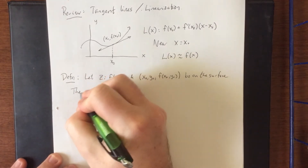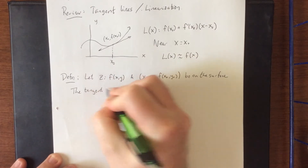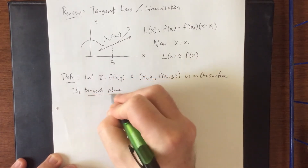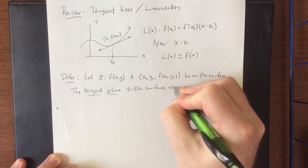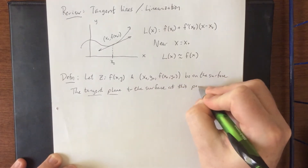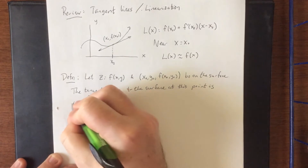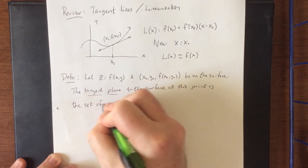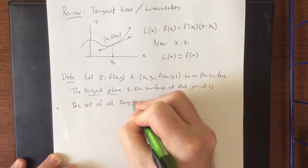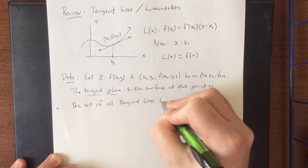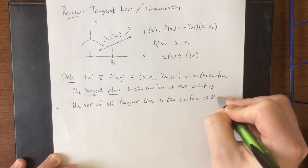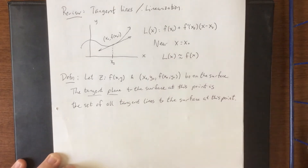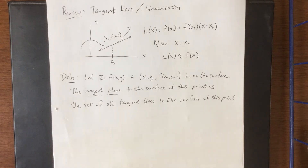The tangent plane to the surface at this point is the set of all tangent lines to the surface at this point.